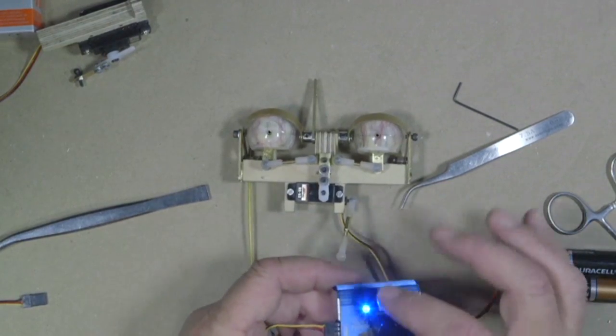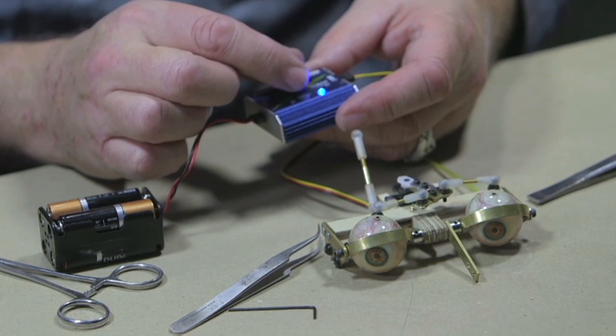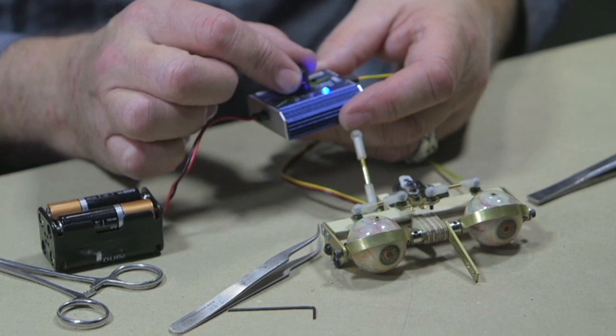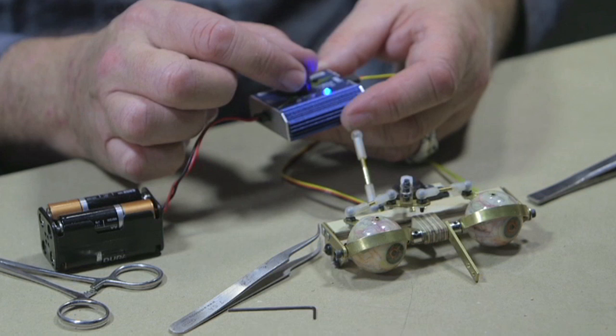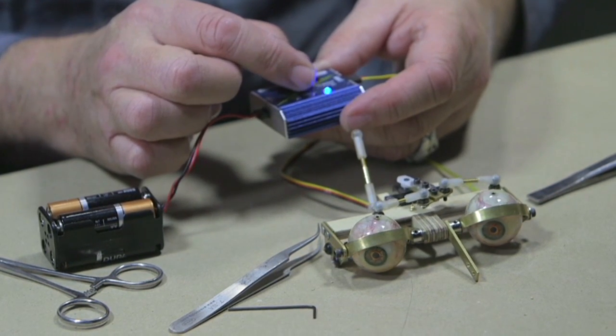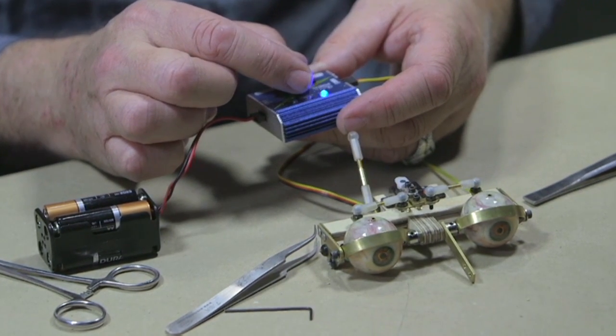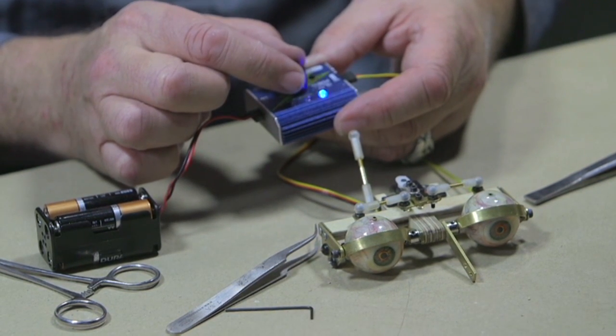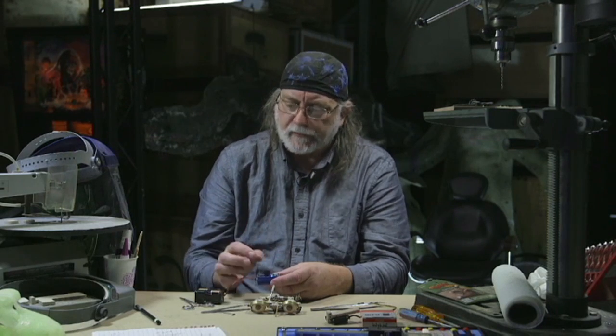It has three different settings and a little select button. One is the manual setting, so you can just move it back and forth like this and see what the range is. Let me show you something here. This servo is capable of going further than the throw of these eyes, so you'll see that, you'll hear that little clicking. That's because it can actually go further than the eyes are built. What I will do later on is when I go into my software program, I will use the software to limit the end throws of these servos.